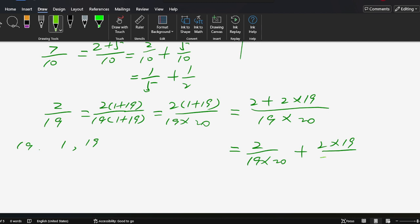This equals 2/(19×20) + (2×19)/(20×19). Simplifying, the solution is 1/190 + 1/10.